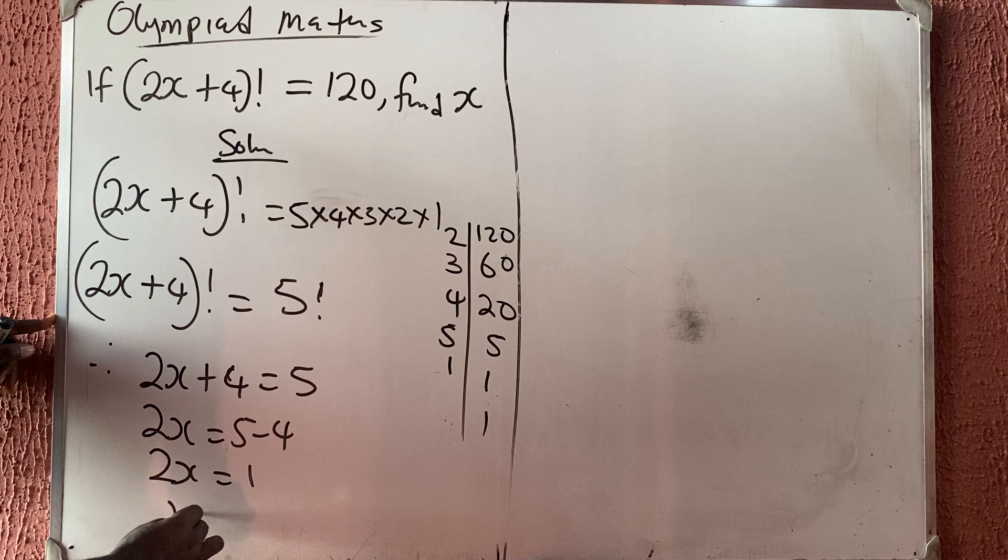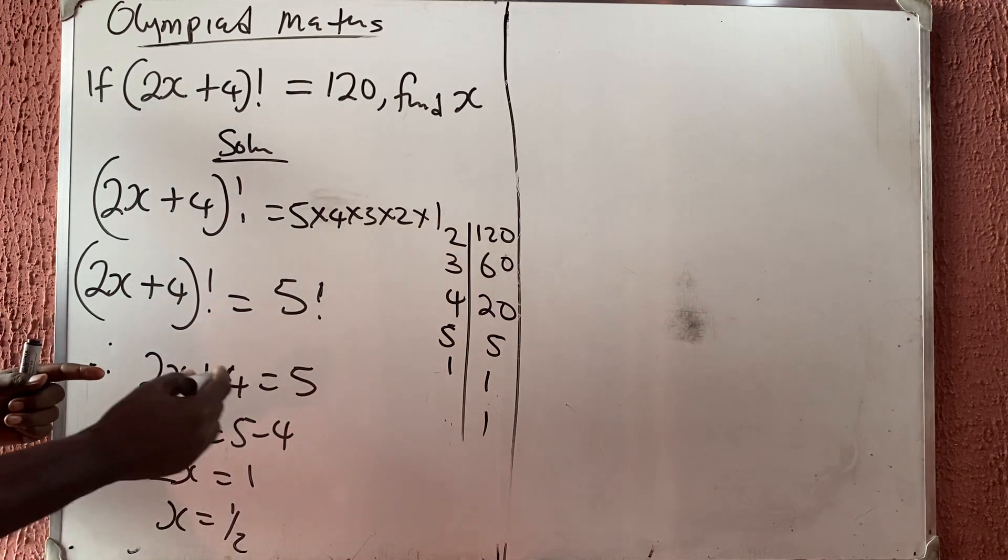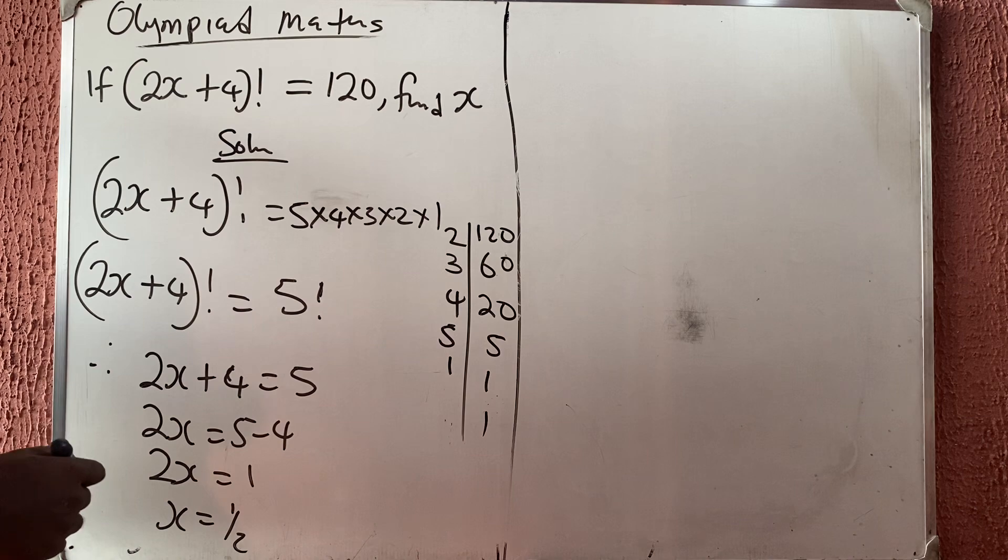Collect items to have that 2x is equal to 5 minus 4. So 2x is equal to 1. So x will now be 1 over 2. So it's very simple.